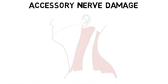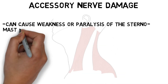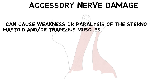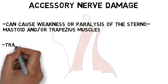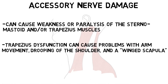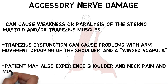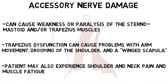Damage to the accessory nerve can cause weakness or paralysis of the sternomastoid and/or trapezius muscles, but trapezius dysfunction is typically the more incapacitating problem. Trapezius dysfunction may impair arm and shoulder movement, cause the shoulder to droop, and cause the shoulder blade to abnormally protrude from the back, a condition known as winged scapula. The patient may also experience shoulder and neck pain, along with muscle fatigue because other muscles in the shoulder and arm that are unaccustomed to supporting the shoulder must be utilized.